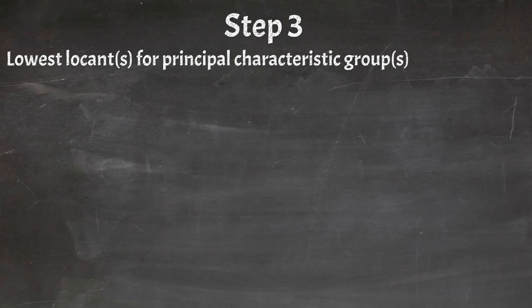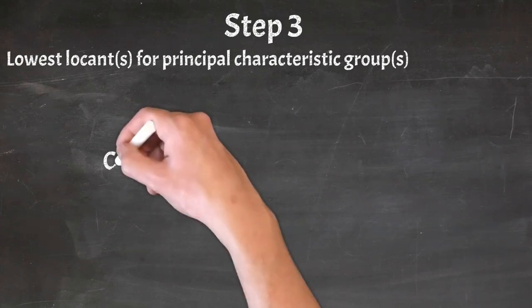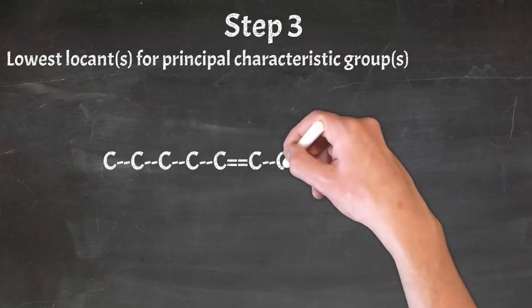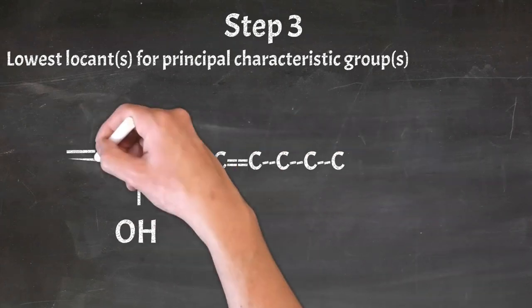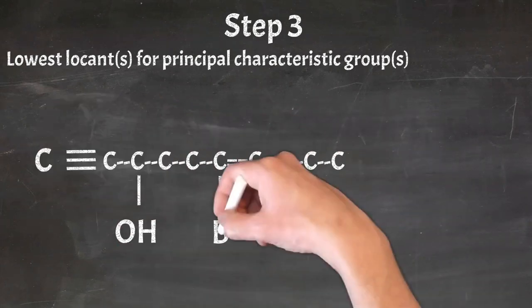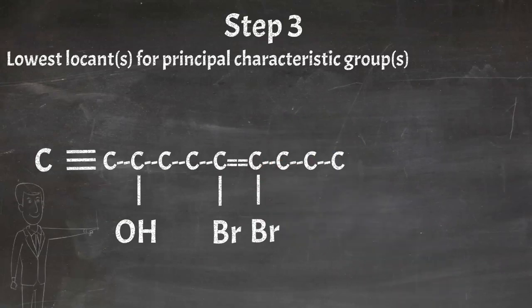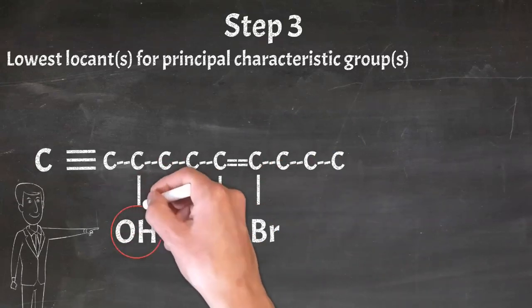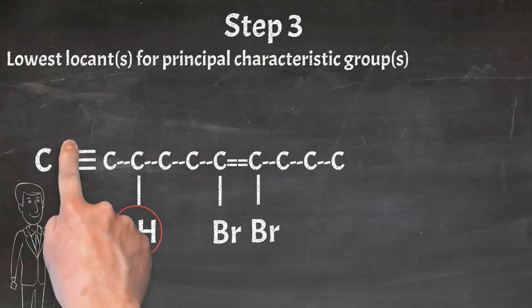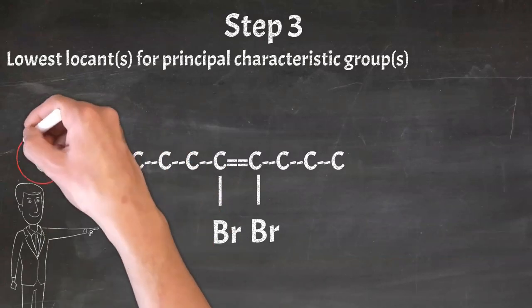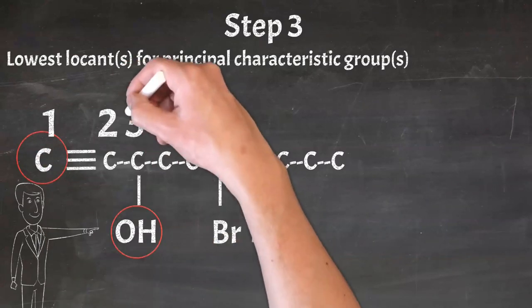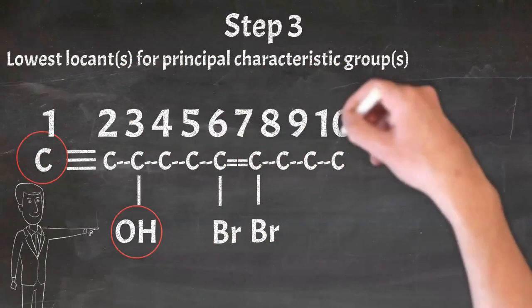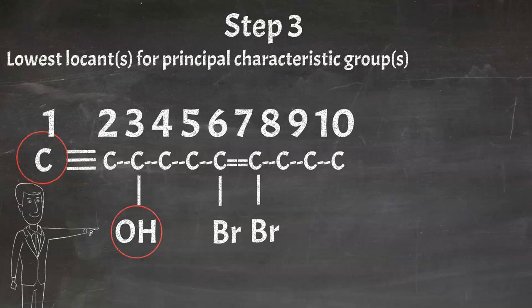Let me give another example to explain this criteria more clearly. In this structure, the OH group is the functional group. As this is closer to this end, we will start numbering from this carbon — that is, from left to right.